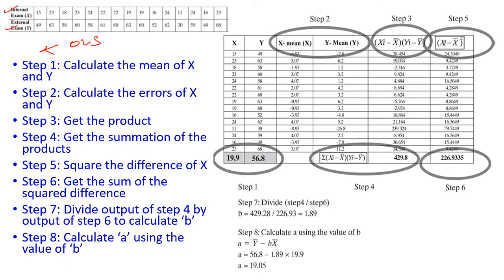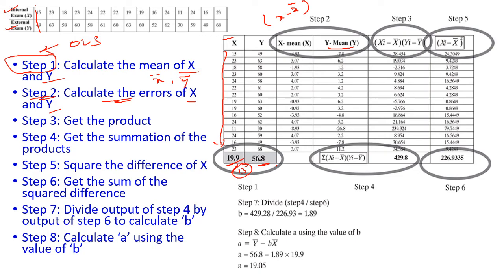These are the given data: internal exam mark and external exam mark. We tabulate those values with the required formula. Step 1 is to calculate the mean of x and y, where x is the internal exam score and y is the external exam score. We sum all x values and divide by 15 (the total number of records). The result: x̄ = 19.9 and ȳ = 56.8.